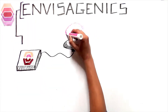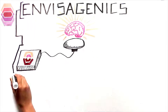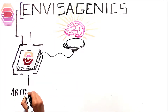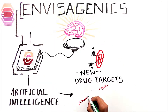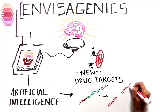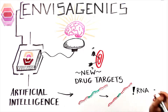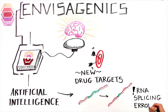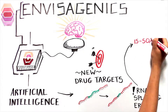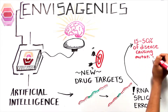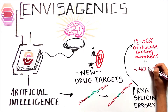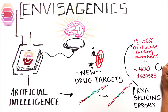Invisigenics uses artificial intelligence for drug target discovery and therapeutics development for diseases caused by RNA splicing errors. RNA splicing errors represent 15-50% of all disease-causing mutations and are the cause of close to 400 diseases.